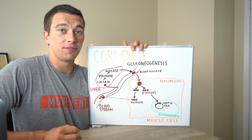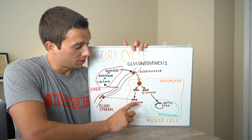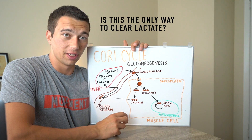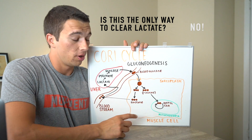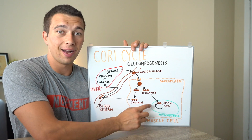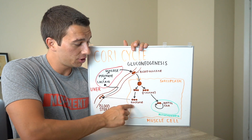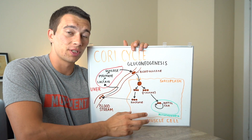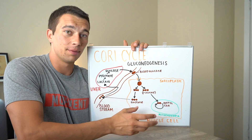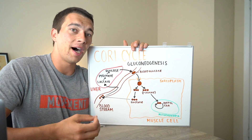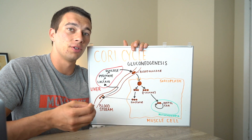You still may have a few extra questions. One question that comes up: is this the only way to clear lactate? The answer is no. Lactate can actually be cleared just in the muscle fiber itself — without actually going through the bloodstream and through the liver. The muscles can actually clear lactate themselves, specifically the type 1 muscles that are highly oxidative and have high mitochondrial density.